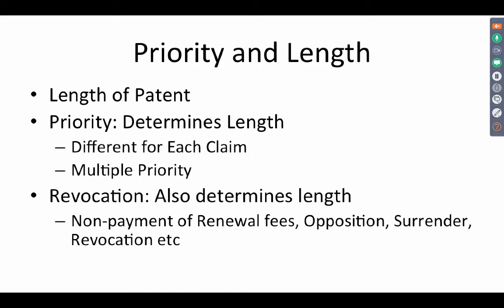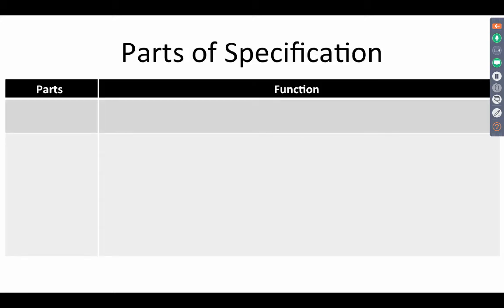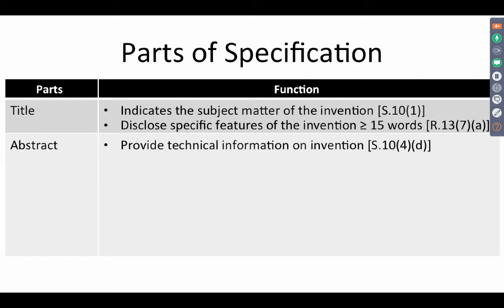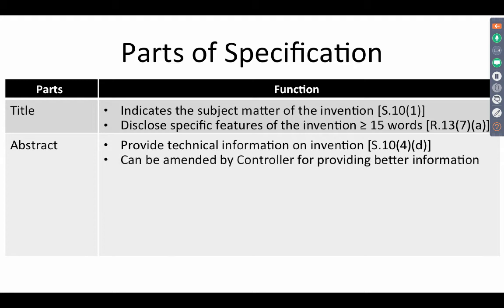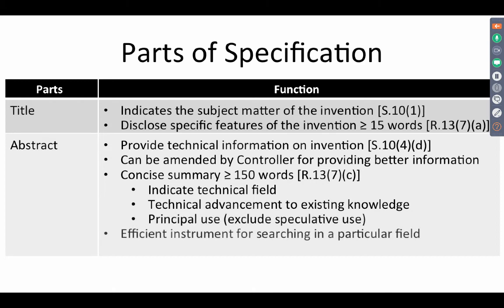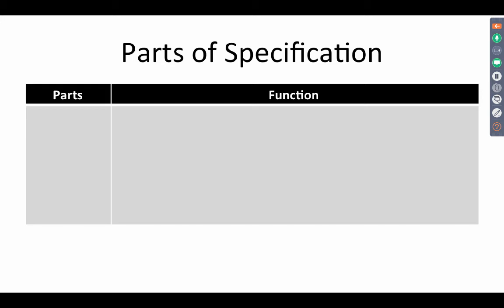By non-payment of renewal fees, the term of the patent can come to an end. By voluntarily surrendering a patent, the term of a patent can also come to an end. Now let us look at the parts of a specification and the function they do. The title indicates the subject matter of the invention and discloses specific features in less than 15 words. The abstract provides technical information of the invention, can be amended by the controller for better information, and is a concise summary of less than 150 words. It indicates the technical field, the technical advancement to existing knowledge, and comparison with prior art. It excludes speculative use and is an efficient instrument for searching a particular field. For a chemical substance, the abstract should have the chemical structure or equation mentioned in it.